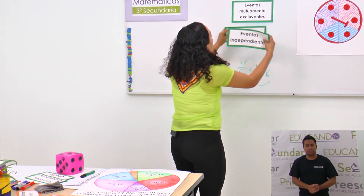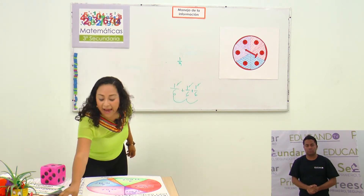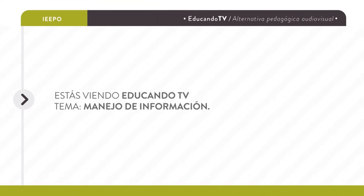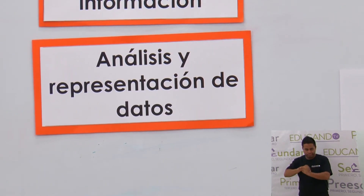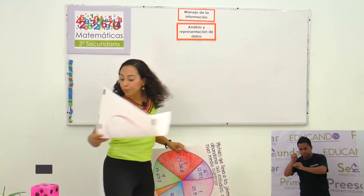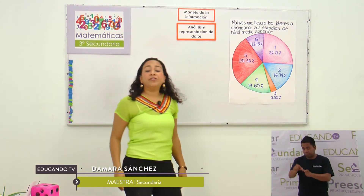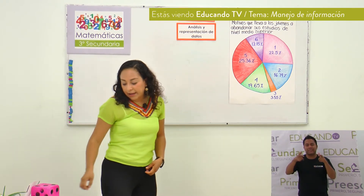Este es otro tema del manejo de la información: se llama análisis y representación de datos. Existen diferentes formas de representar los datos: ya sea por el diagrama de pastel, el diagrama de barras, diferentes tipos de gráficas. En secundaria, básicamente manejamos el diagrama de pastel y el de barras.